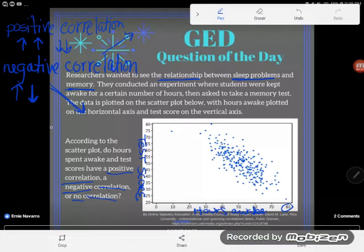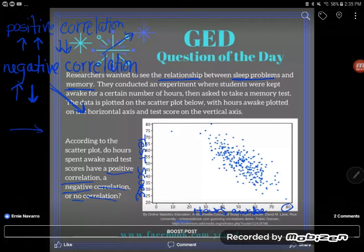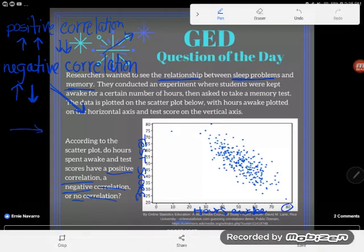A no correlation is either going to be flat line or no line at all. And so let's come over here to this graph. Now, these dots are not exactly in a line, but they're close to a line. You could draw a line right through the middle of these dots.